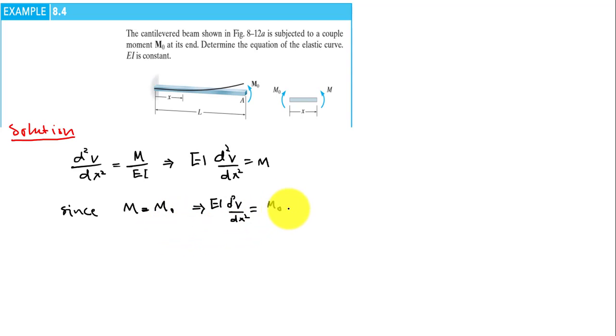We integrate this equation. We integrate this equation twice in order to get the equation of the elastic curve. So the first integration is EI dv/dx equals M naught x plus C1.